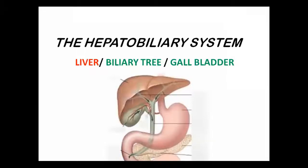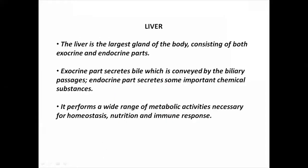Hello students, today I'm going to talk on the topic of the hepatobiliary system, which comprises the liver, the biliary tree, and the gallbladder. The liver is the largest gland of the body, consisting of both exocrine and endocrine parts. The exocrine part secretes bile, which is conveyed by the biliary passages, and the endocrine part secretes important chemical substances. It performs a wide range of metabolic activities necessary for homeostasis, nutrition, and immune response.